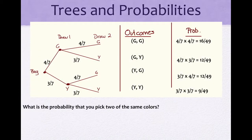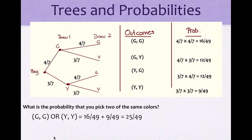What is the probability that you pick two of the same colors? The only outcomes where you pick two of the same colors are green-green and yellow-yellow. The probability that you pick two of the same colors is green and green OR yellow and yellow. Green and green was 16/49, and yellow and yellow was 9/49. Because it's 'or', we add them: the probability is 25/49.